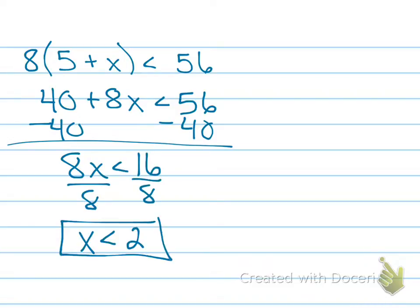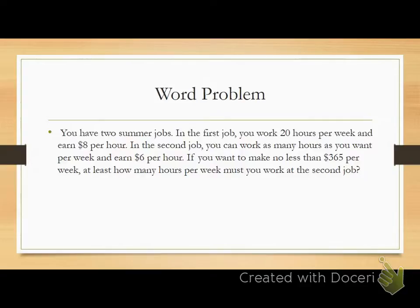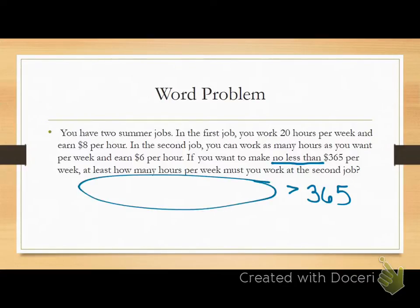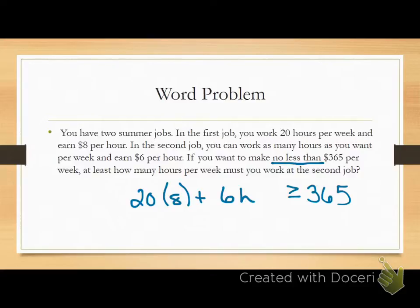There's one more thing that I did want to include on the test review, and that's this word problem. Let me just go ahead and read it. I know the bell is about to ring, but just bear with me. It says you have two summer jobs. In the first job, you work 20 hours a week and earn $8 an hour. In the second job, you can work as many hours as you want per week and earn $6 an hour. Here's the goal. You want to make no less than $365 per week. Here's how it breaks down. $365 is my total. But I want to make more than that. So that's why everything on the left side of this inequality has to be greater than $365. So $20 a week at $8 an hour, I multiply those and I add it to $6 an hour, but I can work as much as I want, and then I would solve.